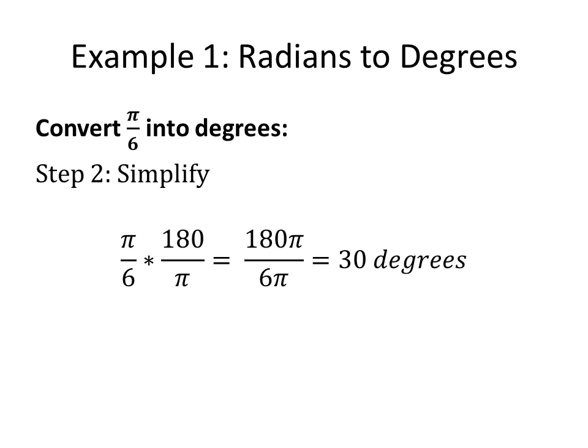Then we simplify the fraction. Remember, when multiplying two fractions, you multiply the two values on the top and the two values on the bottom. So we end up with pi times 180, which gives us 180 pi on the top. And on the bottom, you get 6 times pi, which is 6 pi. So we end up getting 180 pi divided by 6 pi. To get your value in degrees, we simplify this fraction. 180 divided by 6 is 30, and since we have a pi on the top and the bottom of the fraction, the pi's cancel. So you're left with 30 degrees as our final answer.